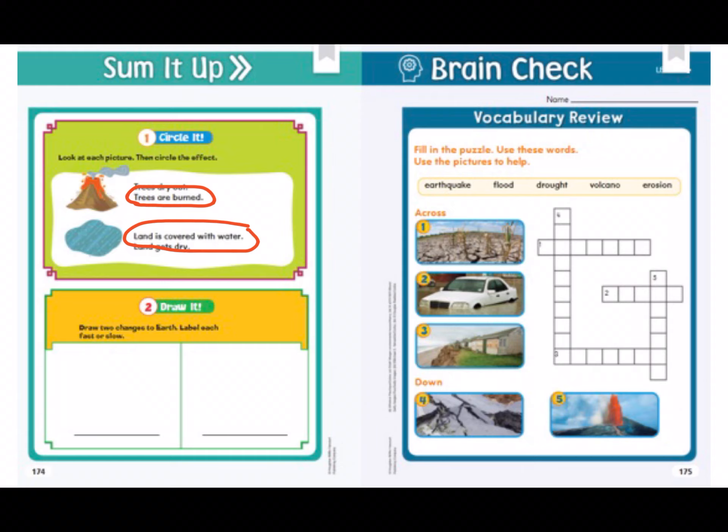On number two, where it says 'draw it,' draw two changes to Earth and label each fast or slow. Then look on your next page where it says 'vocabulary review' — fill in the puzzle and use these words; use the pictures to help. Remember, use the words in that yellow box: earthquake, flood, drought, volcano, and erosion.